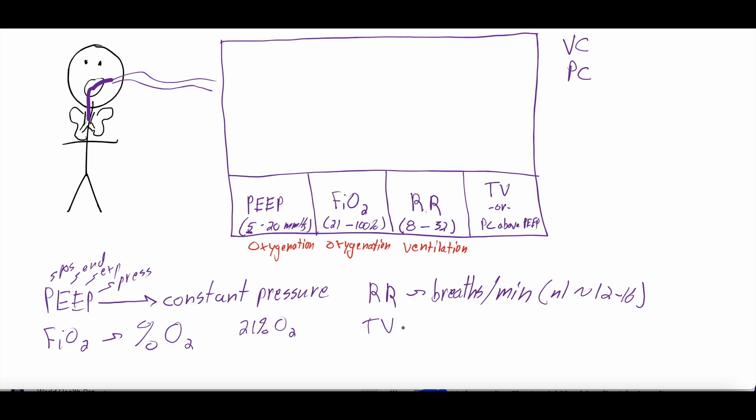All right. And then the tidal volume, TV, tidal volume, is how many cc's or milliliters of this FiO2 that the patient is getting per breath. So the tidal volume, normal, most people do it cc's per kilogram of body weight. So normal is going to be six to eight cc's or milliliters per kilogram of ideal body weight. So ideal body weight based on a person's height rather than their actual body weight.